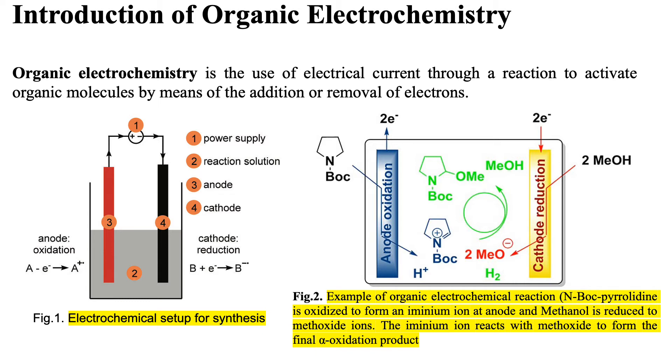Here one example of an organic reaction in an electrochemical cell is given in which N-Boc pyrrolidine oxidizes to form an aminium ion at the anode and methanol is reduced to methoxide ion. The aminium ion reacts with methoxide to form the final alpha oxidation product.